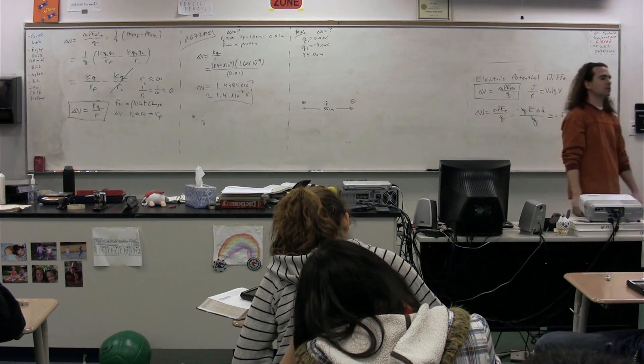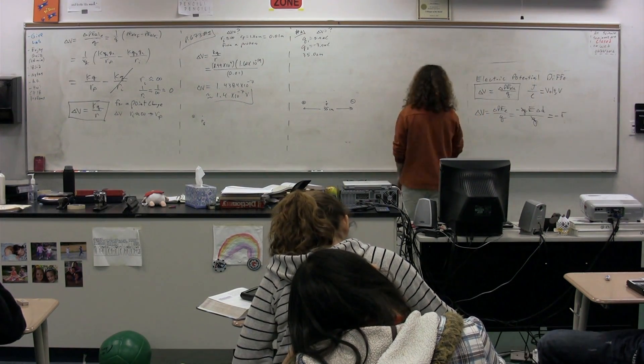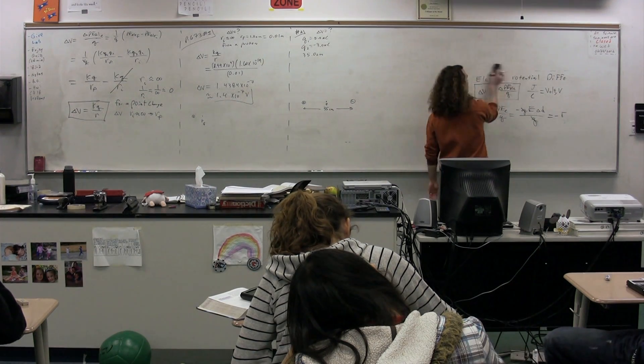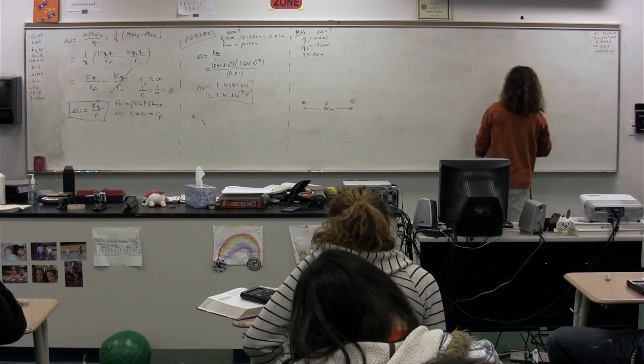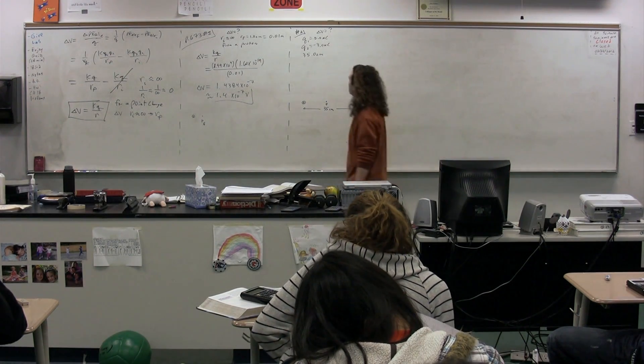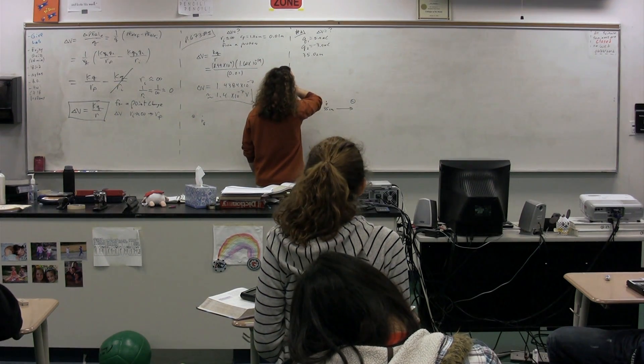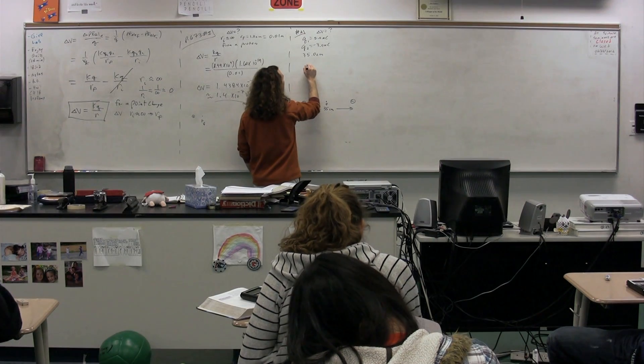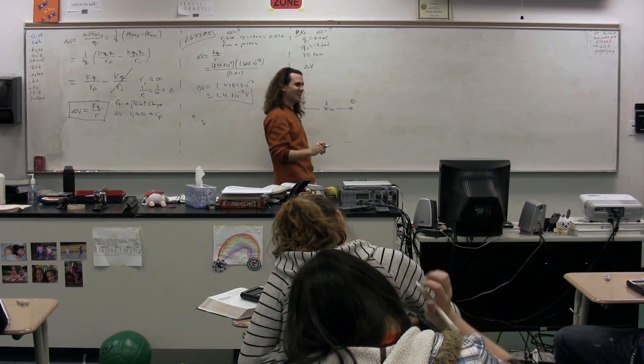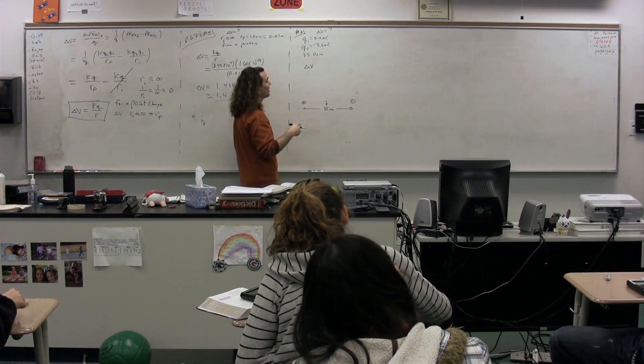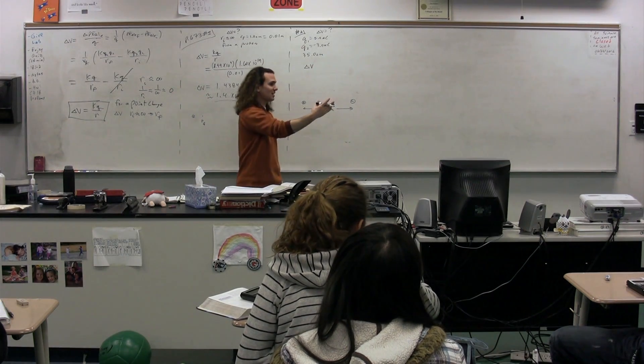General approach - how would you like to solve this problem? We have three different equations for electric potential difference. We have the delta, and we call that change all this time, but instead we're going to put difference at the end, which is the same thing.